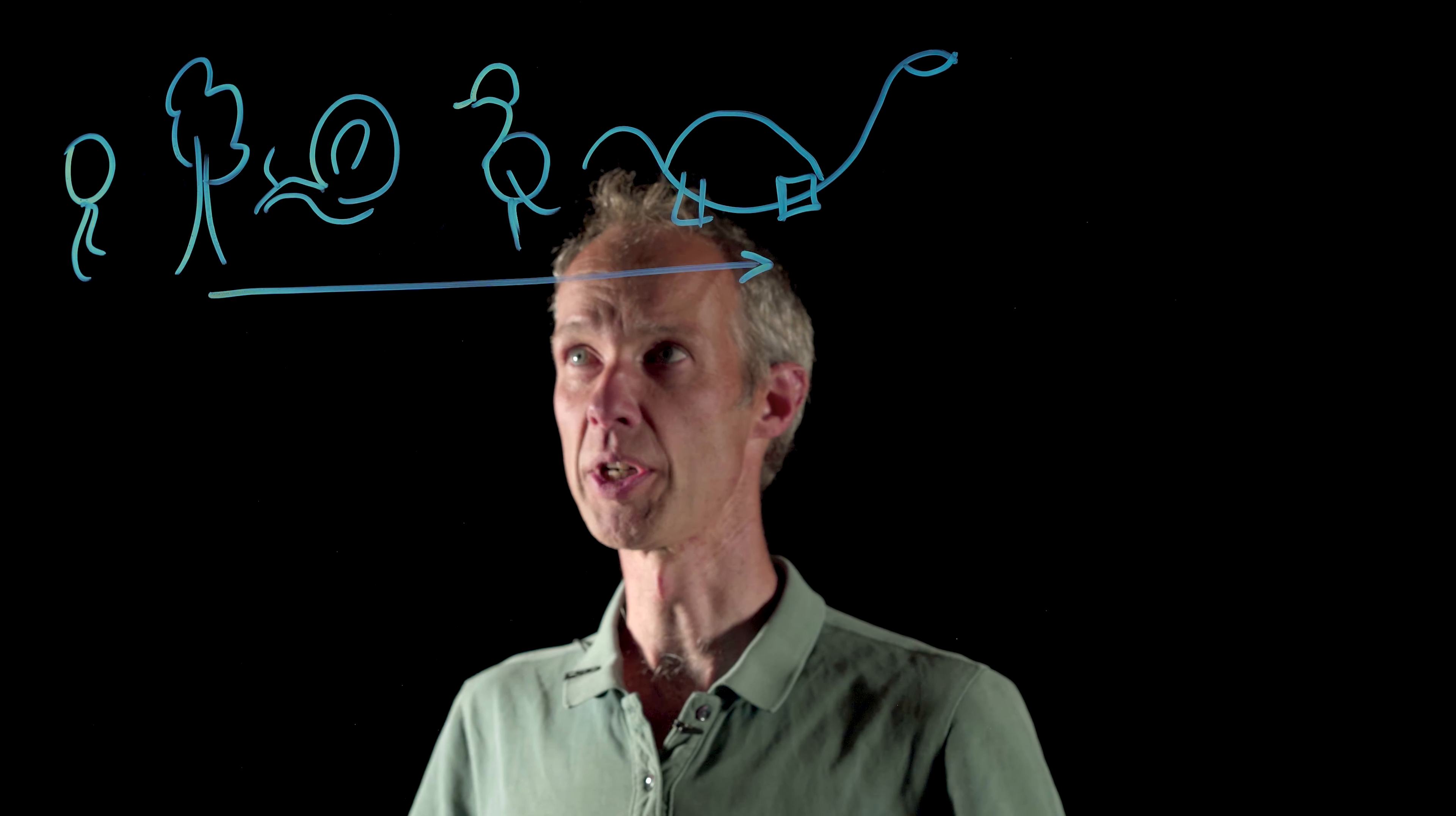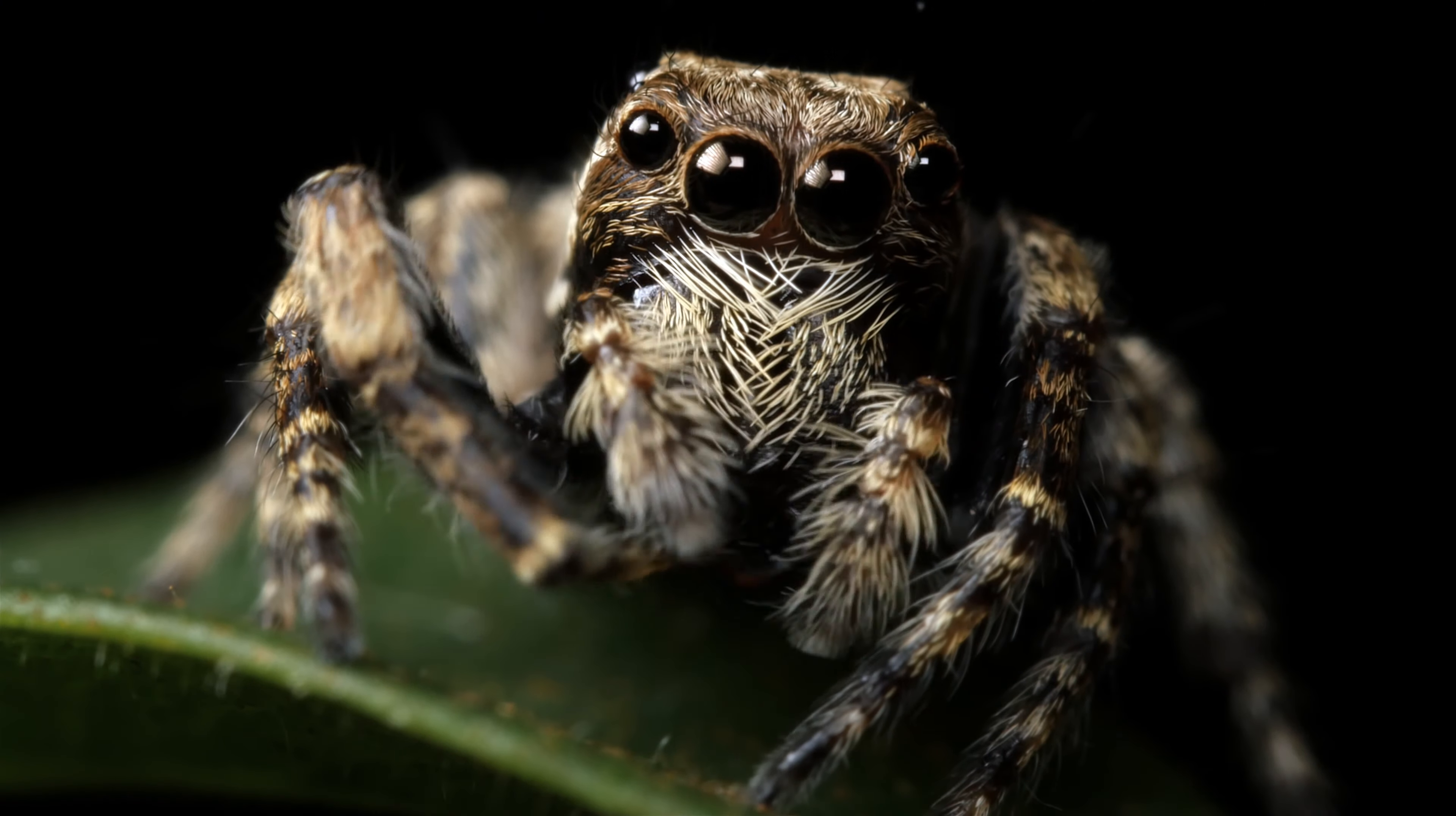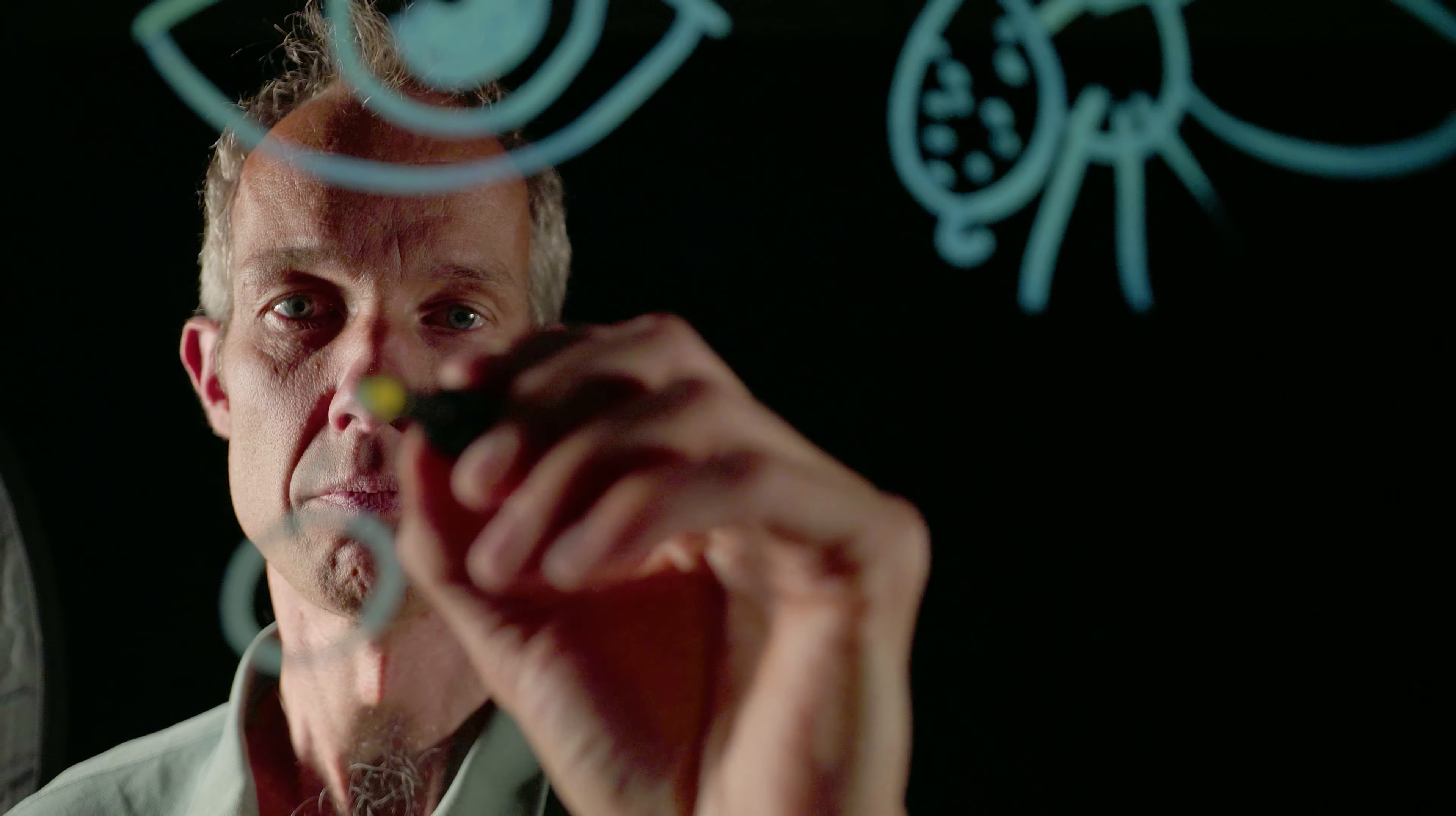Snails, birds and even dinosaurs evolved. Looking back at the evolution of life, there seems to be some sort of drive towards more complexity. That suggests that there is some sort of predictability to evolution.